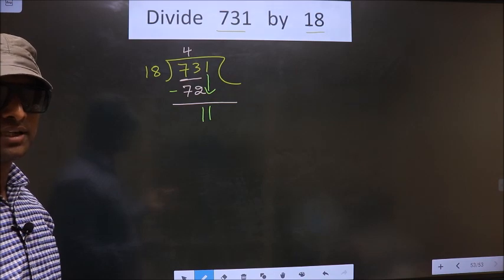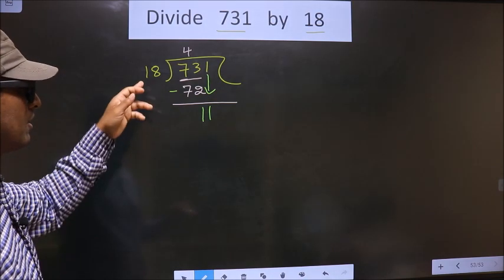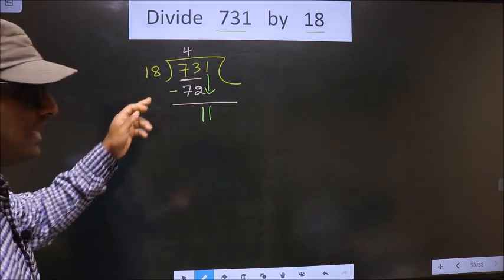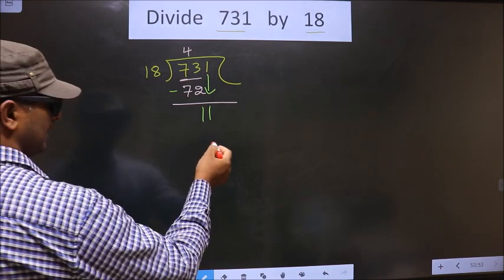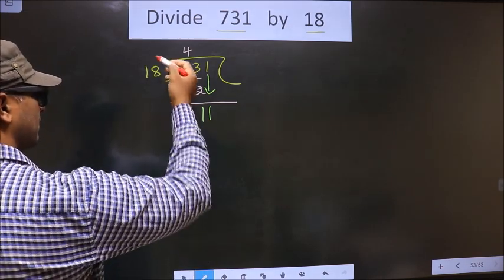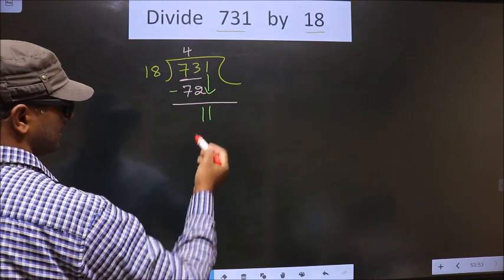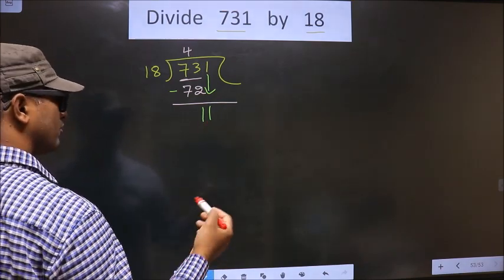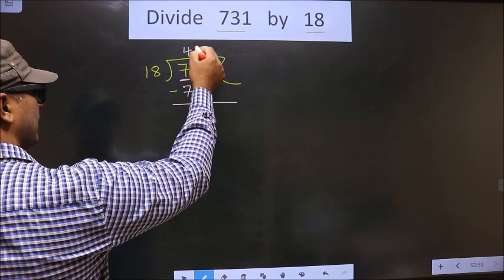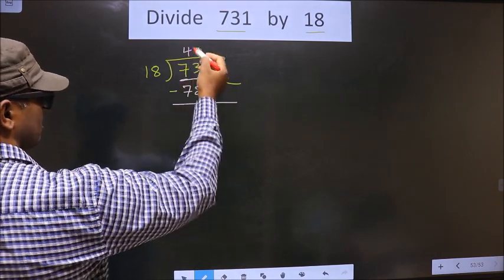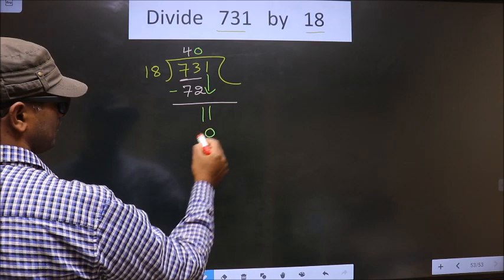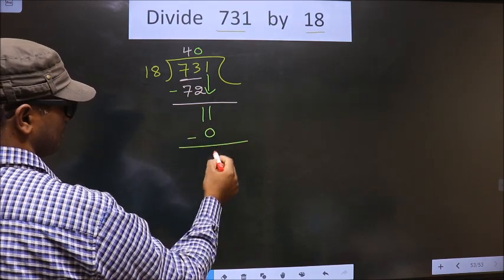Instead, what you should think of is: to this number, what should we multiply to get a number here? If I multiply by 18, I get 18 here, but 18 is larger than 11. So what we do is we multiply by 0. 18 into 0 is 0. Now you subtract, you get 11.